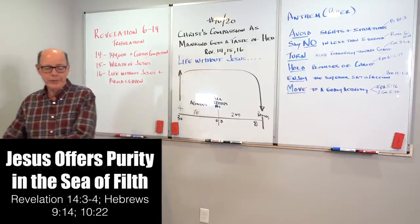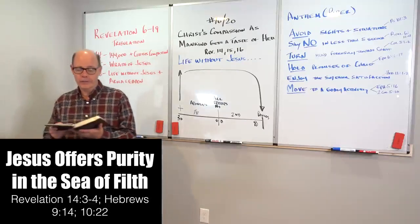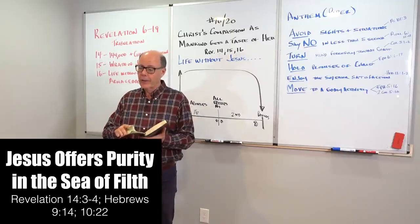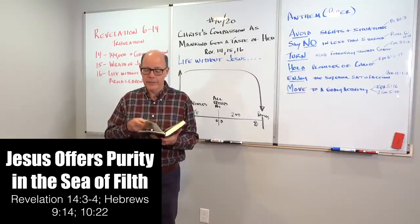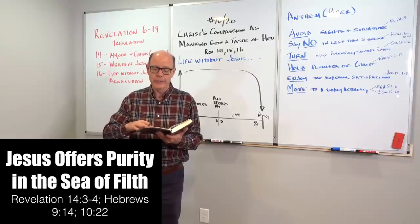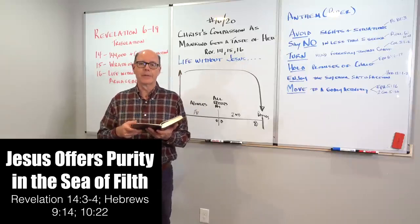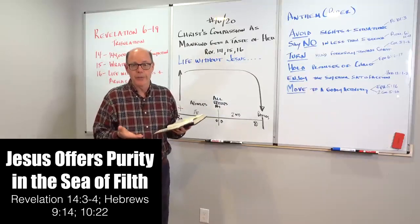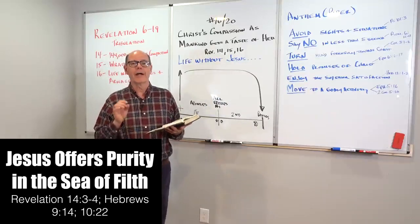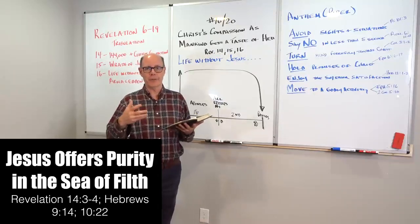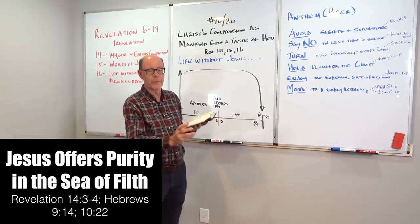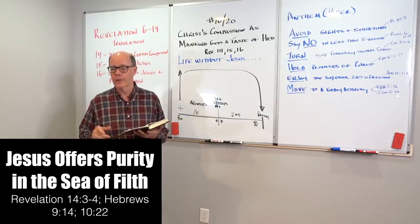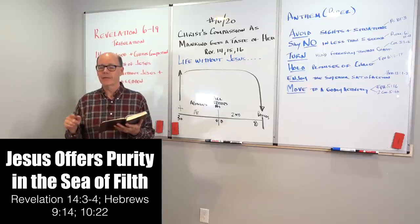But keep going to verse three, because Jesus also in Revelation 14:3 is offering what I call purity in the sea of filth. Now, where I get that term sea of filth is from one of the Roman historians who said that the Roman empire in the first century had degenerated to a level that it was like a cesspool - a cesspool is like a septic tank, like a sewer system. And he said, that's what Rome had become, kind of like a sewer.